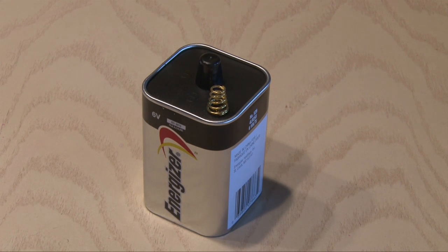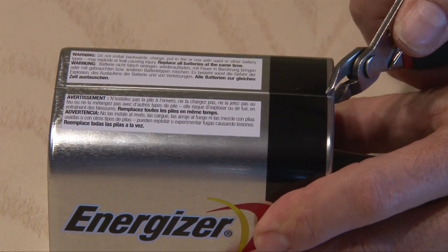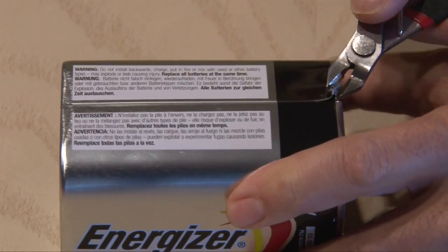It's a 6-volt Energizer Lantern battery. I decided to tear this one open to see what was inside, so I used a pair of snips and carefully cut away at the housing.